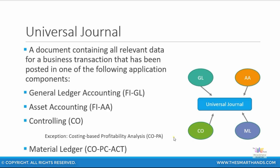For example, in the SAP ERP system, you have separate line item tables for general ledger — the BSEC table; asset accounting has the ANEP table and ANLC table; controlling has the COEP table and COEJ table; and material ledger has the MSEG table, and so on — made up of multiple different line item tables.